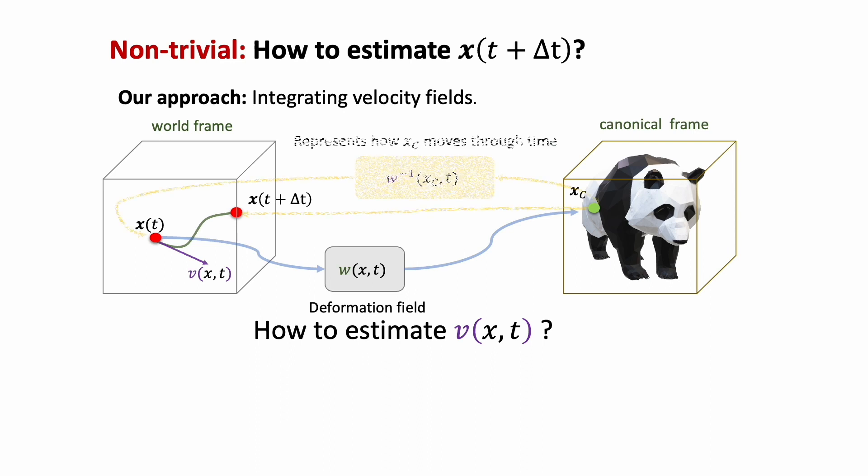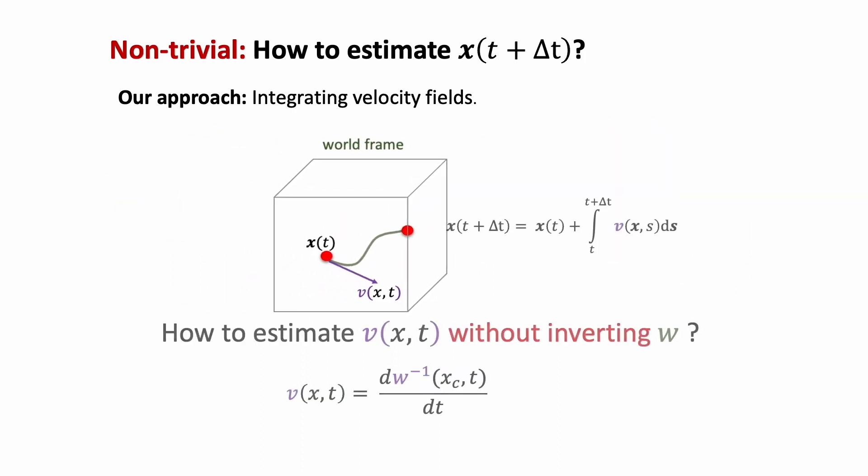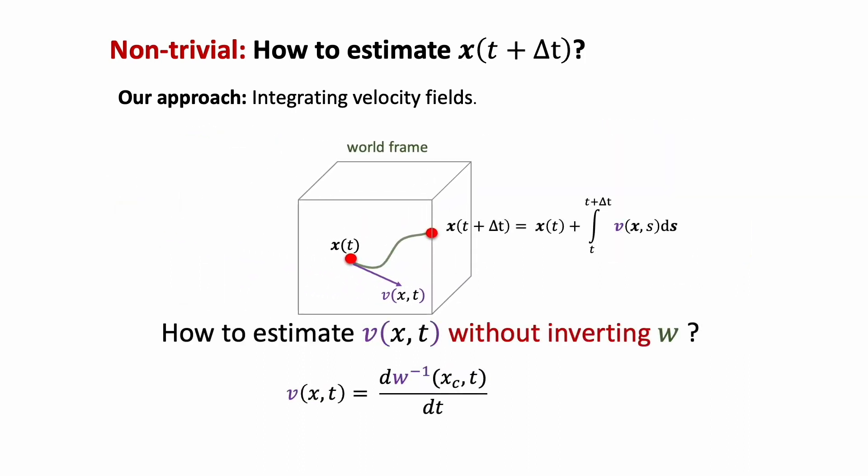Assuming the existence of an inverse deformation field that represents the movement of a physical point in the canonical frame over time, the velocity can be computed as the time derivative of the inverse deformation field. But we cannot directly utilize this equation to compute velocity, because it still requires inverting the deformation field, which is not feasible. It turns out that explicitly inverting the deformation field is not needed to evaluate the time derivative, because we can derive this new equation without the inverse deformation field by leveraging the inverse function theorem.